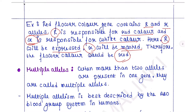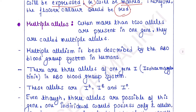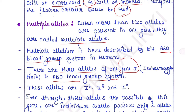Next are multiple alleles. When more than two alleles are present in one gene, they are called multiple alleles. Multiple allelism is best described by the ABO blood group system in humans. There are three alleles of one gene — the I gene, or isohemaglutinin gene. This gene contains three alleles: IA, IB, and IO.